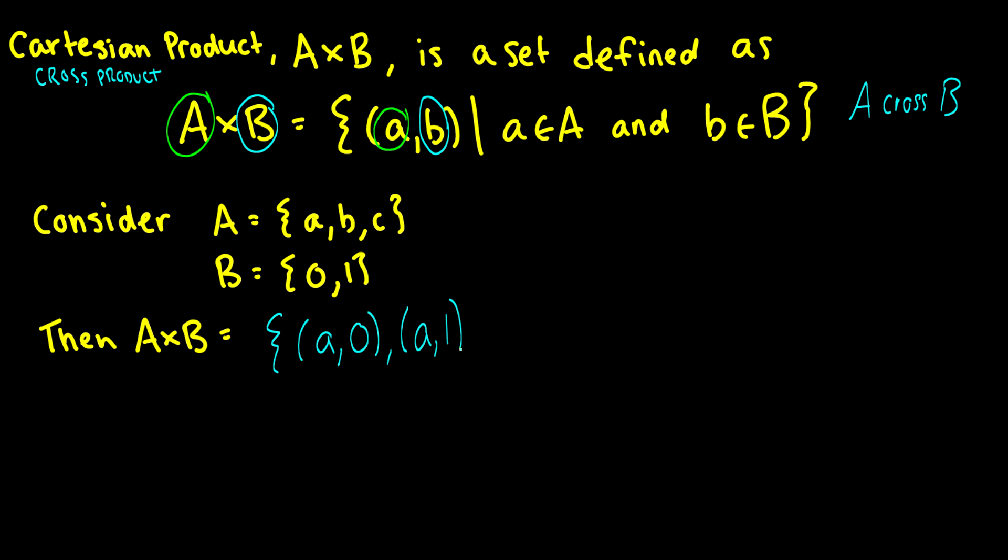A cross B is the set where every element in A is paired with every element in B. It is kind of like multiplying. In fact, if we have (a+b+c) times (0+1), then we have a0 plus b0 plus c0 plus a1 plus b1 plus c1. It's the same idea except these are ordered pairs.